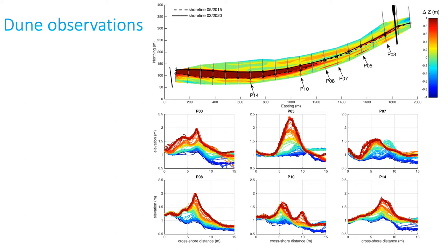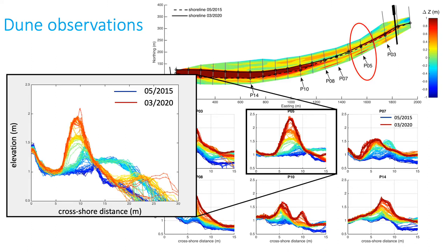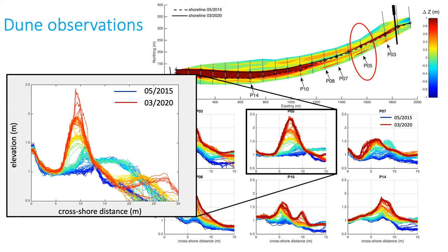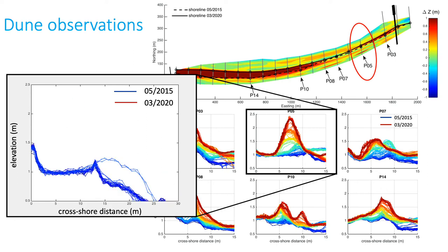The top image shows the five-year beach elevation change, where dark red areas show the largest elevation increase. The dashed black line represents the shoreline position in May 2015 and the solid black line corresponds to March 2020. There are some locations that show a large increase in elevation landward of the shoreline, where dune generation and growth is observed. The lower panels show the five-year foredune evolution at selected beach transects. This presentation will focus on transit P5, where beach progradation is small. The high temporal resolution of the surveys allows identification of the moment of dune generation and subsequent growth, and investigation of the processes involved.